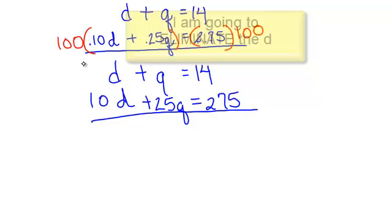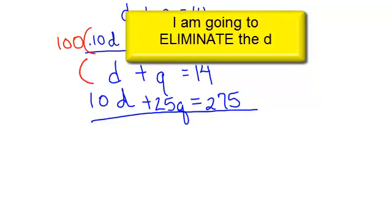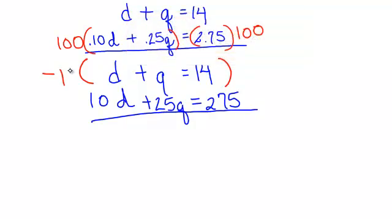I'm going to choose to eliminate the d's, which means that I'm going to multiply this entire equation by a negative 10. And of course, whatever you do to one side, you have to do to the other.